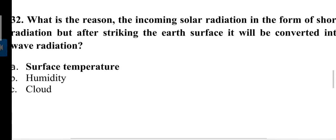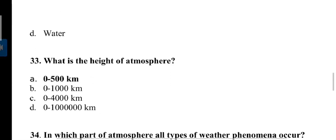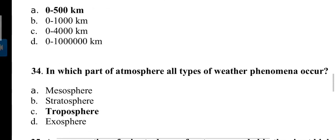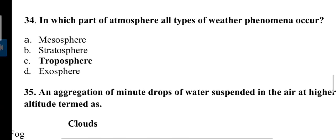The percentage of water vapor in atmosphere by volume: answer is 0 to 4%. Next, what is the reason the incoming solar radiation is in the form of short wave radiation, but after striking the earth surface it is converted into long wave radiation? The cause is surface temperature. Next question: What is the height of atmosphere? Height of atmosphere is 0 to 500 kilometers. Atmosphere has layers like troposphere, stratosphere, mesosphere, thermosphere, ionosphere, and exosphere. In which part of atmosphere do all types of weather phenomena occur? As we previously discussed, the layer is troposphere, the lowermost layer of atmosphere.